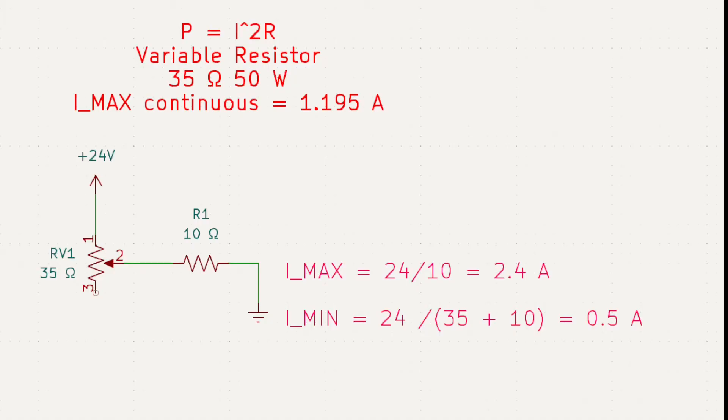So our minimum current is 24 divided by 45 ohms, which is 0.5 amps.